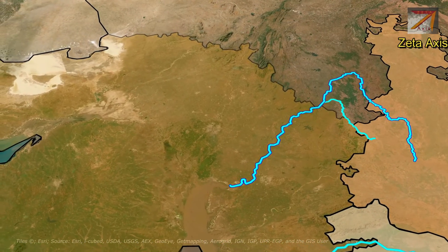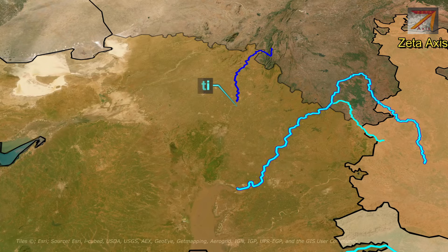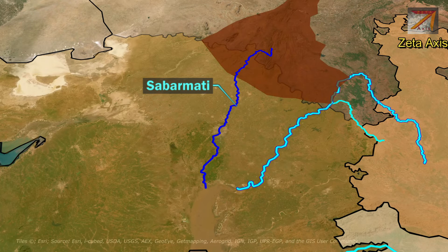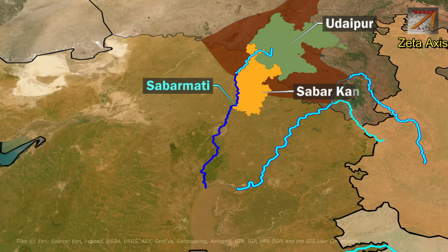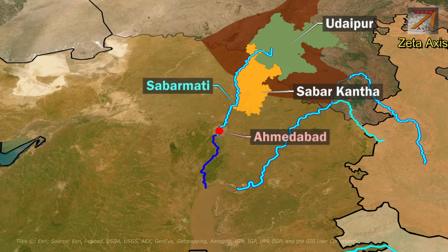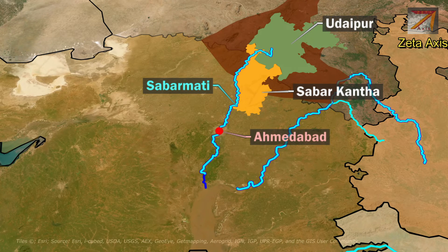The next important river of Gujarat is Sabarmati. The Sabarmati River originates in the Aravalli Hills of Udaipur district of Rajasthan. The Sabarmati River flows into Gujarat in Sabarkantha district. Ahmedabad city is located on the banks of Sabarmati River. The Sabarmati River continues to flow and drains into the Gulf of Khambhat.